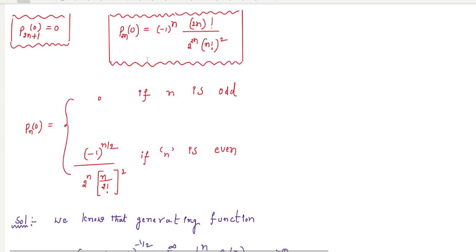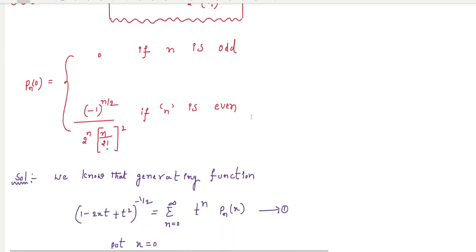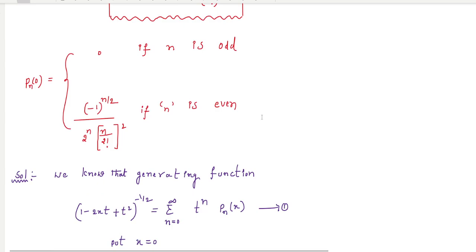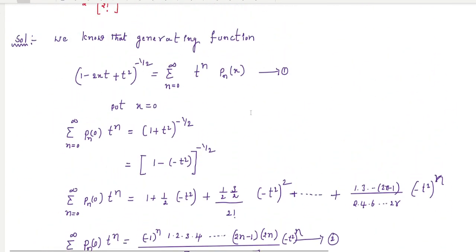We need to prove these two properties using the generating function of Legendre polynomials. Our generating function is (1 - 2xt + t²)^(-1/2) = sum from n=0 to infinity of t^n P_n(x). This is equation 1. Put x = 0 in equation 1, then you will get (1 + t²)^(-1/2) = sum of t^n P_n(0).